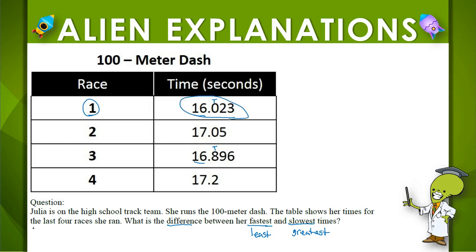Now for the greatest, look at the 17-second times. One has 0 tenths and the other has 2 tenths. Well, 0 tenths is smaller and 2 tenths is larger, so that makes 17.2 the greatest time — or the slowest time. So this was her fastest time and this was her slowest time.